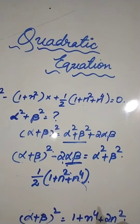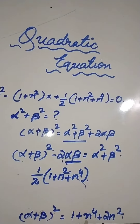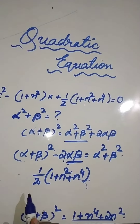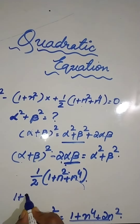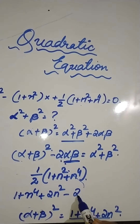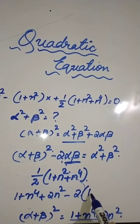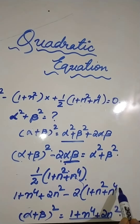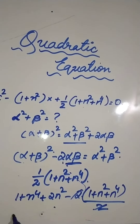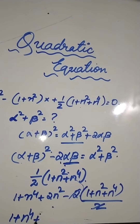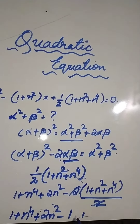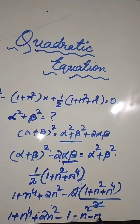Now I will subtract this equation from the other. So we get: 1 + n⁴ + 2n² minus 2 × (1 + n² + n⁴) / 2. The 2 and 2 get cancelled, and the remaining expression is: minus n² minus n⁴.